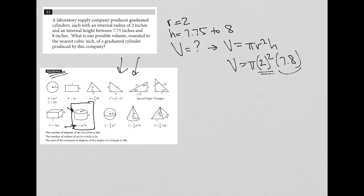So this becomes four. Of course, we have times our 7.8. So I'm going to multiply four times 7.8 in my calculator. Four times 7.8, I get 31.2. So I'd end up having 31.2 pi.